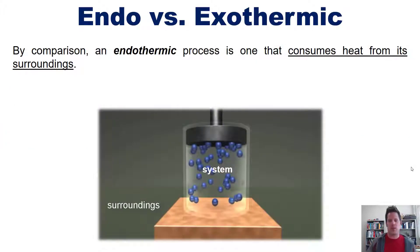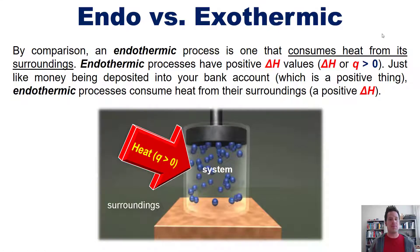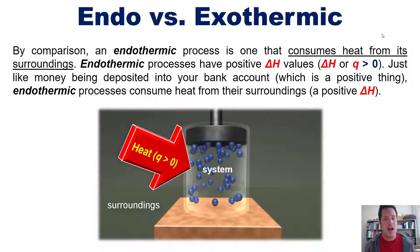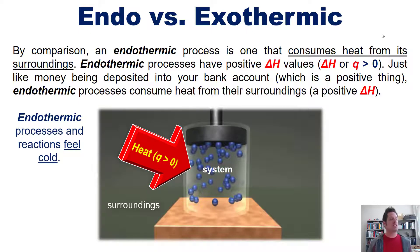By comparison, an endothermic process is one that consumes heat from its surroundings. Endothermic processes have positive delta H values — delta H or Q is greater than zero. Just like money being deposited into your bank account, which is a positive thing, endothermic processes consume heat from their surroundings, giving them a deposit of heat and a positive delta H. Being the opposite of an exothermic process, endothermic processes and reactions feel cold to their surroundings.